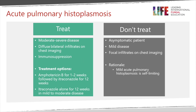In the context of acute pulmonary histoplasmosis, you don't need to treat the patient if they're asymptomatic, if they have mild disease, or if there are mild focal infiltrates on chest imaging — because this is a self-limiting infection. On the other hand, if the patient is moderately or severely ill with bilateral diffuse infiltrates on the x-ray, or immunocompromised in any way, then treatment should be given. Amphotericin B is the standard initial therapy, given for one to two weeks, usually followed by itraconazole for 12 weeks.